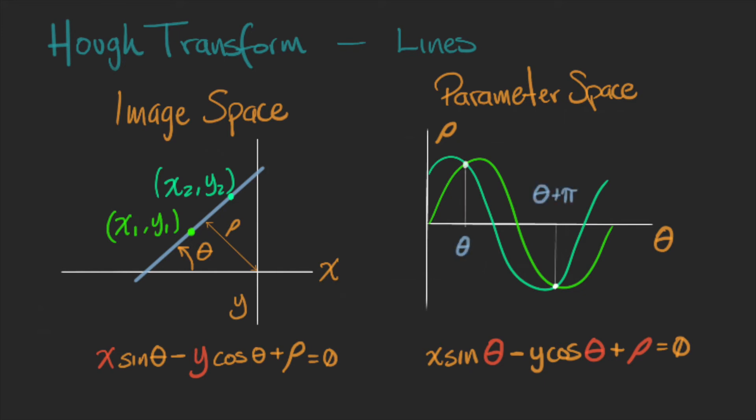Here you will find theta and theta plus pi. But both of these intersections correspond to the same line in the image space.